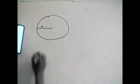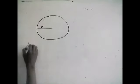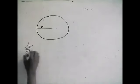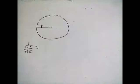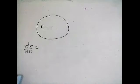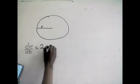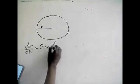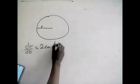So we're given dR over dT. The radius of a circle is increasing at a rate of 2 centimeters per minute — so dR/dT equals 2 centimeters per minute.